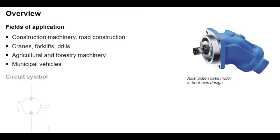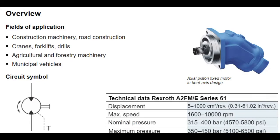The circuit symbol for this kind of motor is the symbol for a reversible fixed motor with a drain port. The A2FM and A2FE fixed motor comes in 22 sizes, from 5 to 1,000 cubic centimeters per revolution. While the smaller sizes, up to around 200 cubic centimeters, are primarily used in mobile hydraulics, the larger sizes, from 250 to 1,000 cubic centimeters, are used in industrial hydraulics.